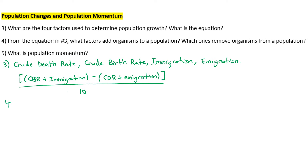Number four: from the equation in number three, what factors add organisms to a population and which remove them? Adding: crude birth rate and immigration. Removing: crude death rate and emigration.